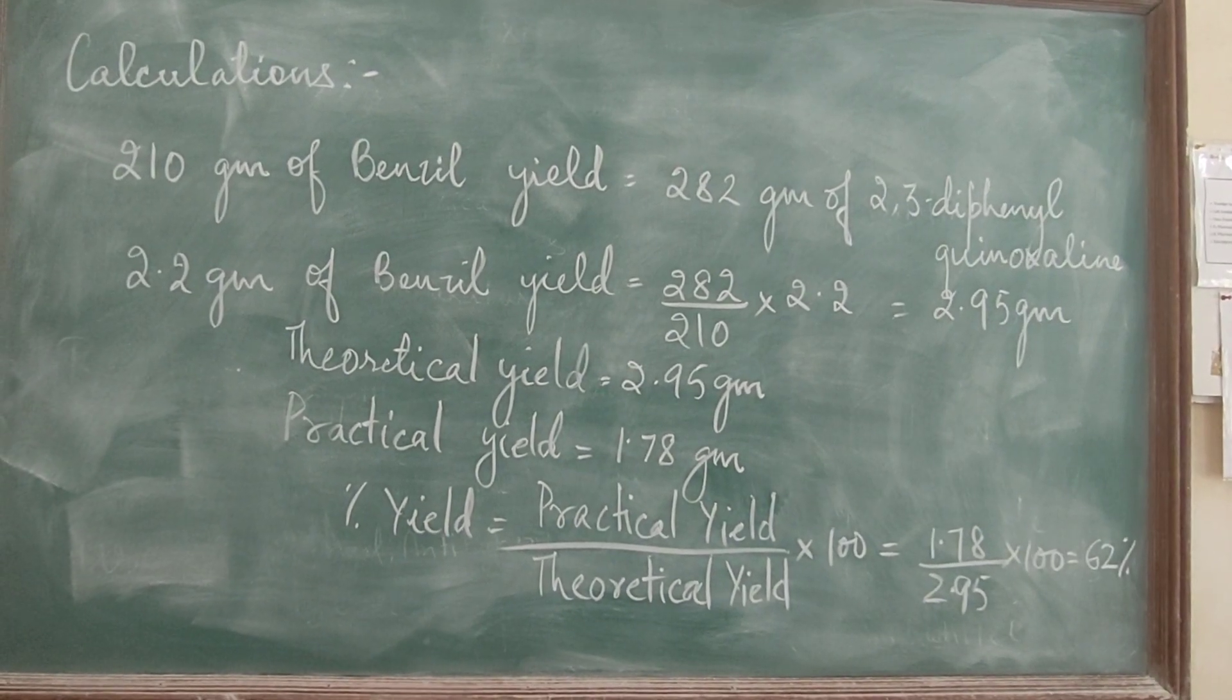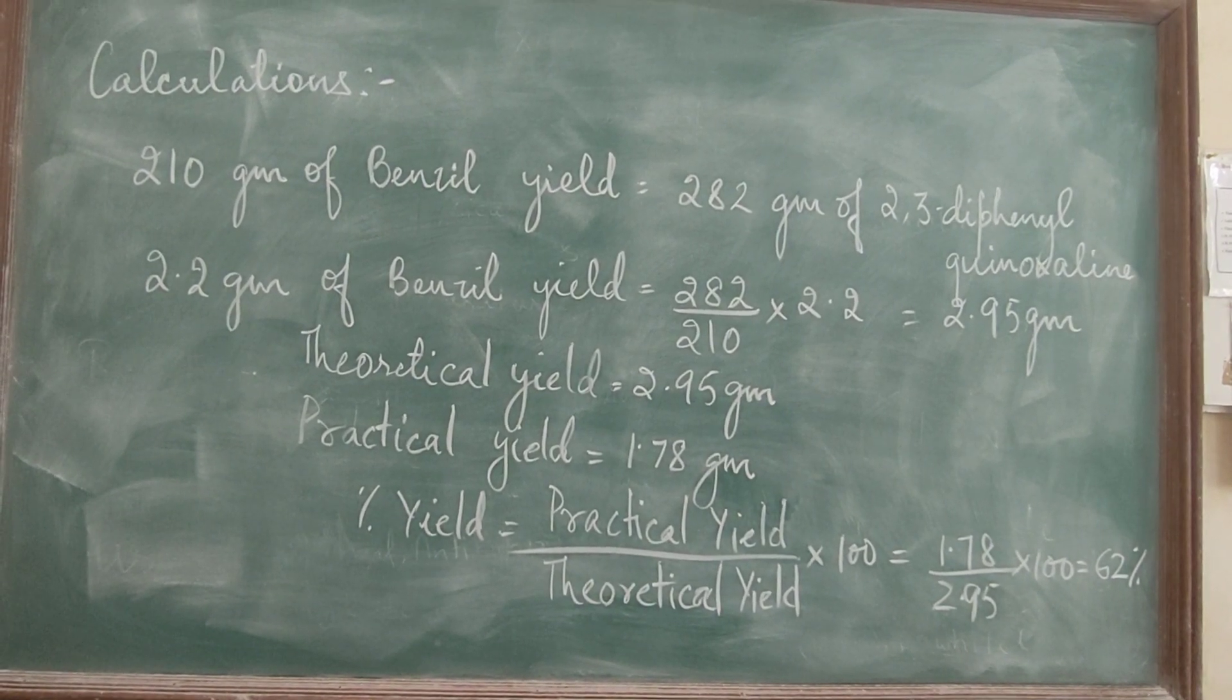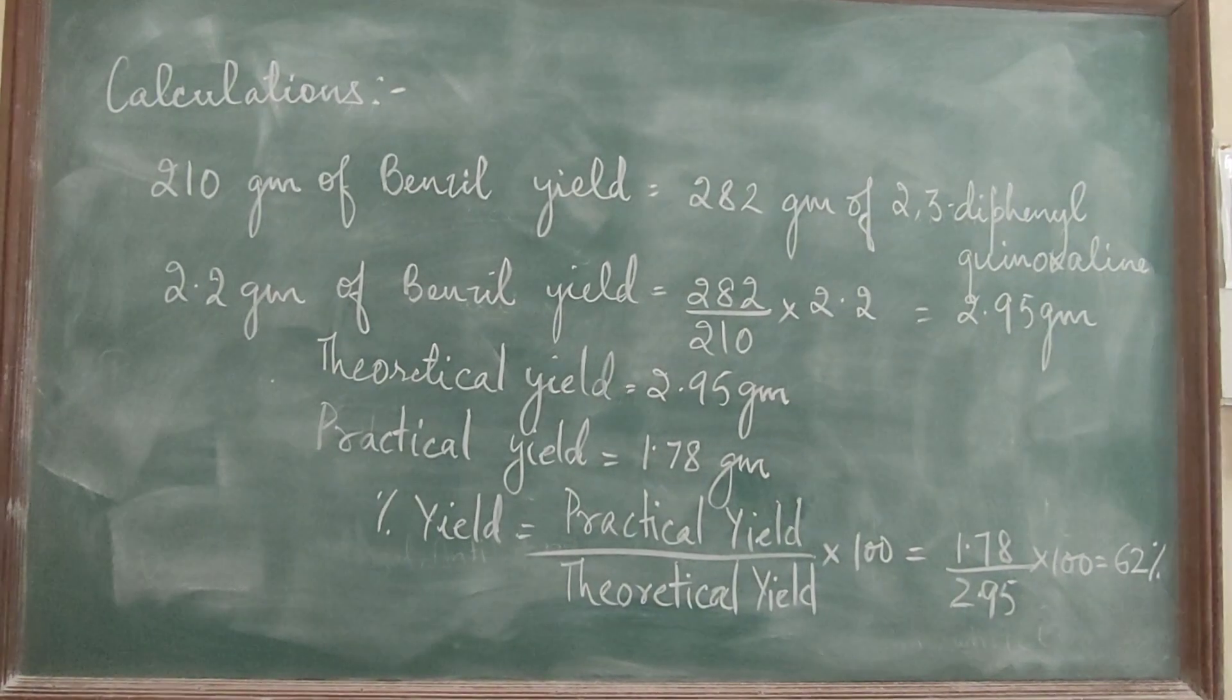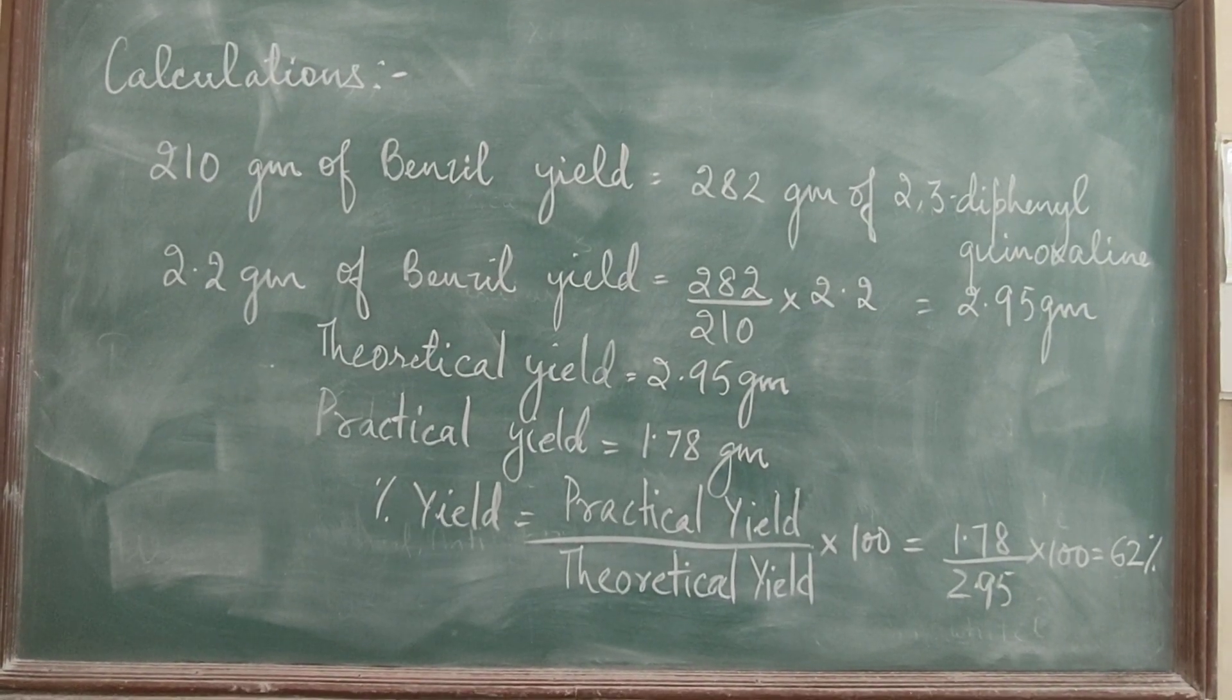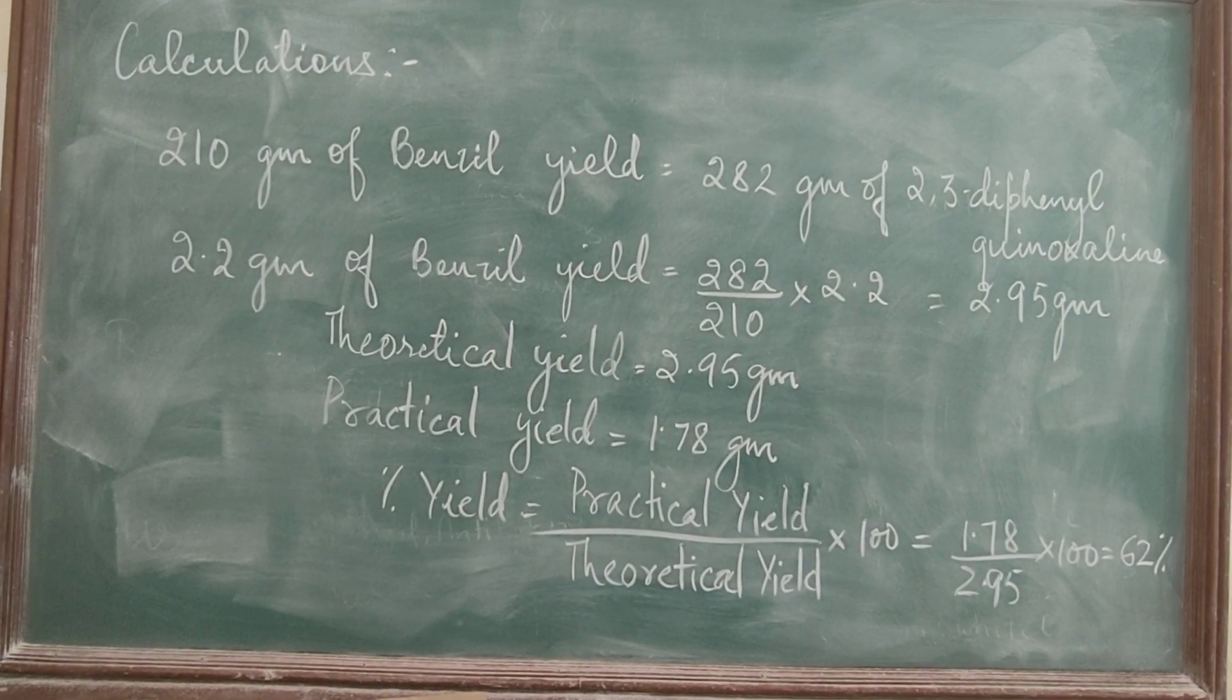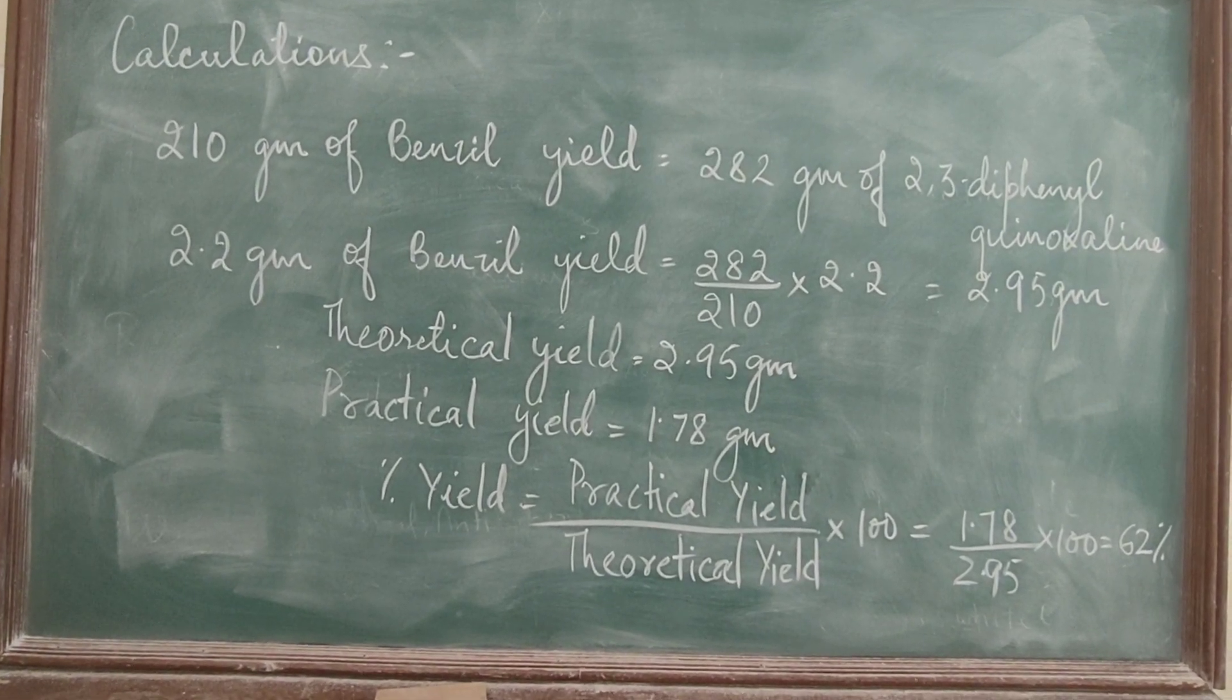The calculation is 210 gram of benzil yields 282 gram of 2,3-diphenyl benoxazine. The practical yield after weighing the product is 1.78 gram. The formula of percentage yield is equal to practical yield divided by theoretical yield multiplied by 100. So the percentage yield comes here 62 percent.